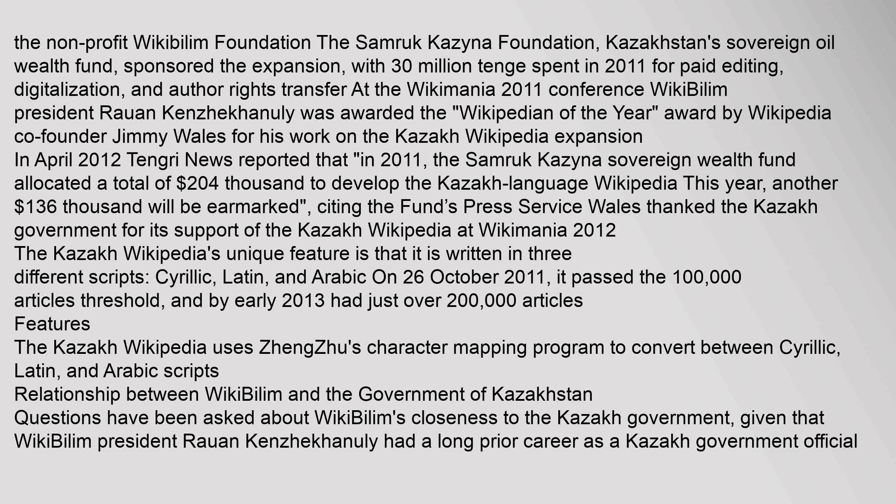Wikibilum President Rawan Kenjekanulay was awarded the 'Wikipedian of the Year' award by Wikipedia co-founder Jimmy Wales for his work on the Kazakh Wikipedia expansion in April 2012. Tengri News reported that in 2011, the Samrok Kazina Sovereign Wealth Fund allocated a total of $204,000 to develop the Kazakh Language Wikipedia. This year, another $136,000 will be earmarked, citing the fund's press service. Wales thanked the Kazakh government for its support of the Kazakh Wikipedia at Wikimania 2012.